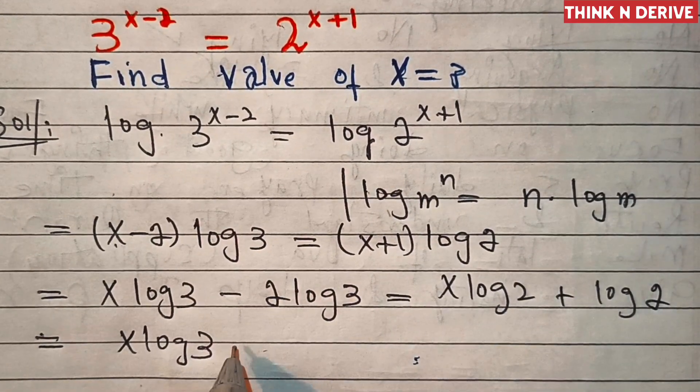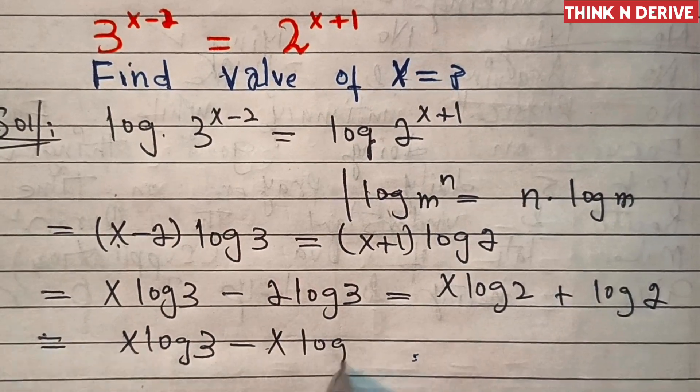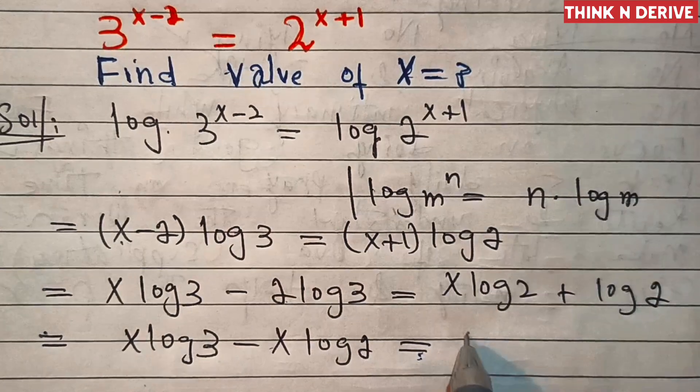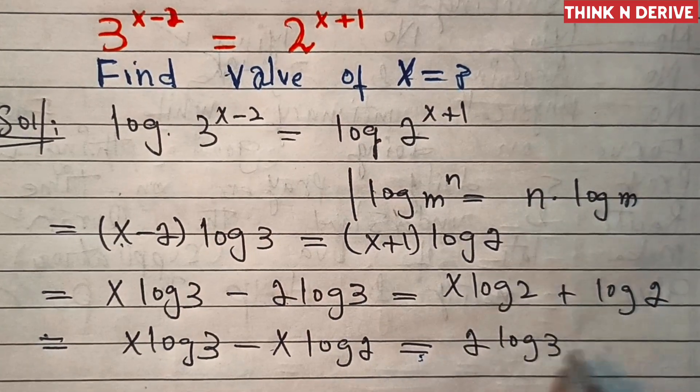This is minus x log 2 equal to, we'll transpose this to right hand side, so this is 2 log 3 plus log of 2.